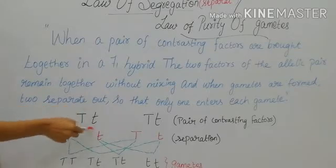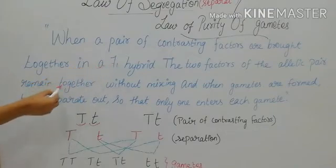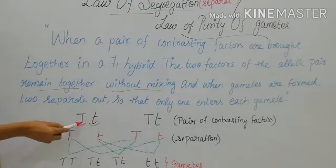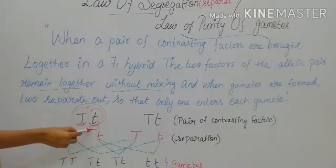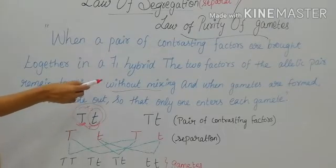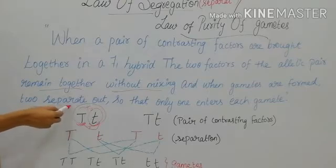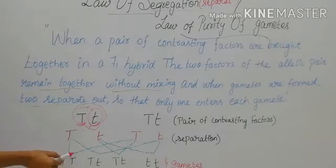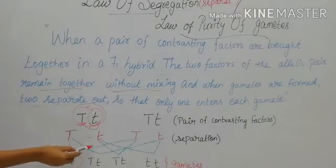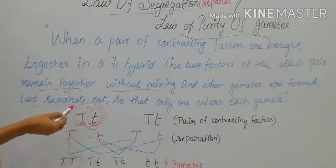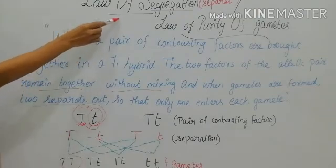Here, tall and dwarf are a pair of contrasting factors brought together. The factor for tall and the factor for dwarf stay together but do not get mixed — the tall character will not mix with the dwarf character and vice versa. During the formation of gametes, these two alleles separate out, and only one allele enters each gamete. One allele from one parent and another allele from the other parent join to form the gametes, but both alleles from one parent will not enter the same gamete.